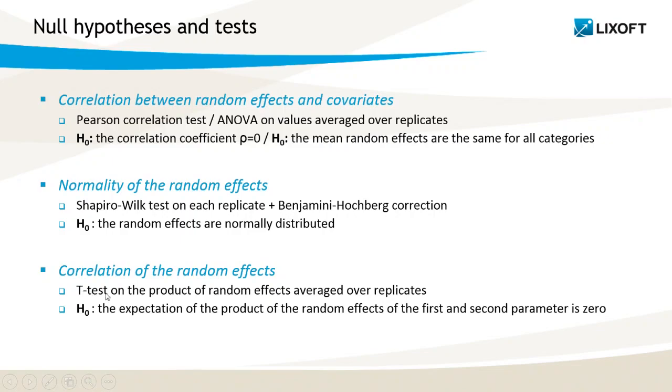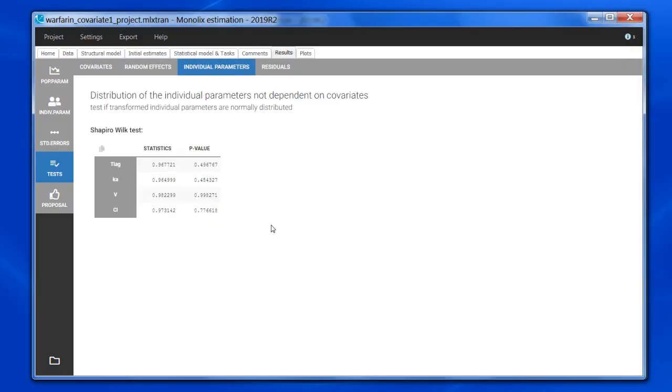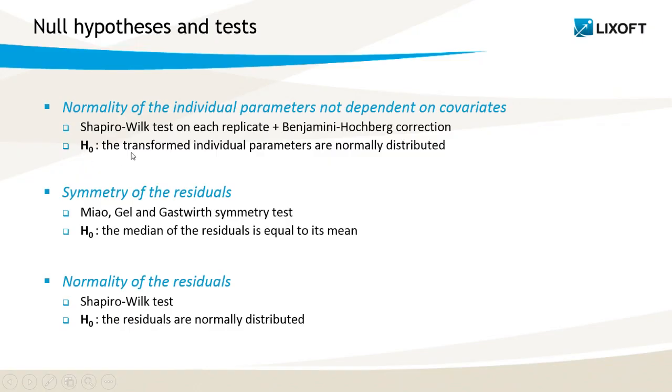In the next tab, individual parameters, we test if the transformed individual parameters are normally distributed. If no covariates are included, the test is the same as for the random effects, but this is not the case anymore when covariates are present in the model. The null hypothesis is that the transformed individual parameters are normally distributed, and again, this is tested with the Shapiro-Wilk test on each replicate, plus the Benjamini-Hochberg correction.